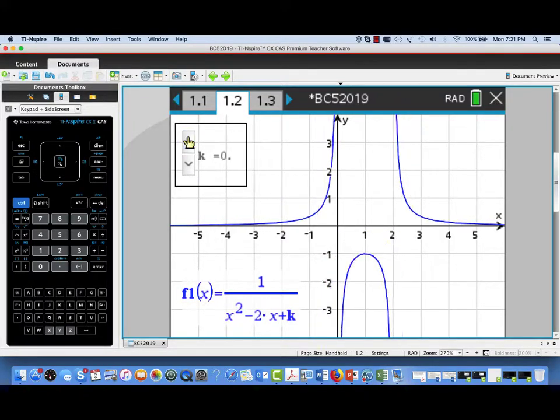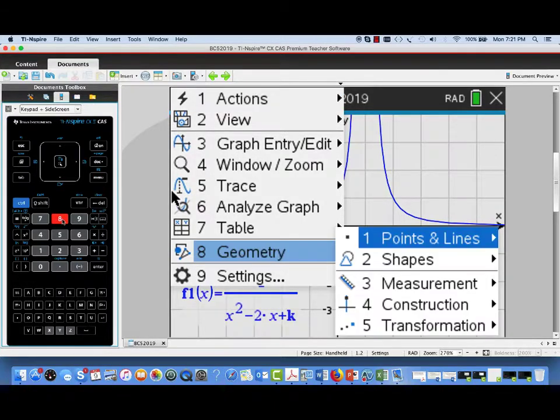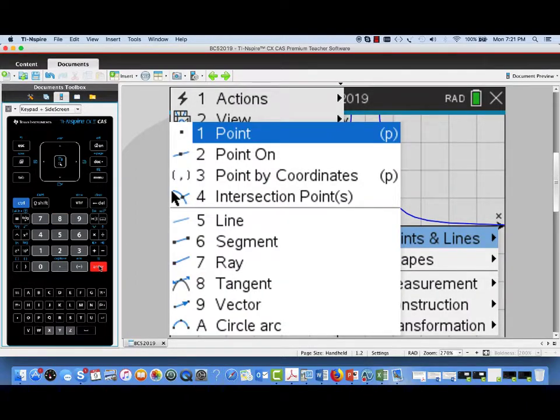I'm going to return now to k equals 1, and let's go ahead and address some of the questions that were in this problem. Part A of this problem, BC5, asked us to find the value of k that would result in a tangent line at x equals 0 with slope 6.